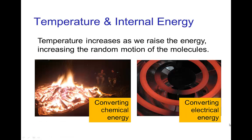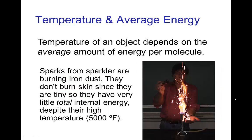Energy and heat capacity. Temperature is related to the molecular energy within an object, and temperature will increase as we increase the energy, which increases the random motion in molecules. There are a variety of ways of increasing that energy — we could release chemical energy like in a fire, or convert electrical energy like in an electric range. Temperature does not indicate the total amount of energy that an object has; it indicates the average amount of energy per molecule.